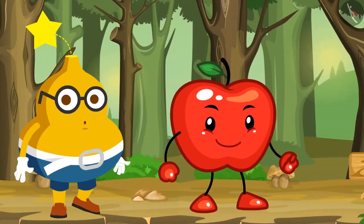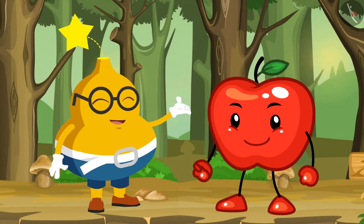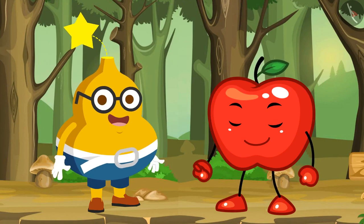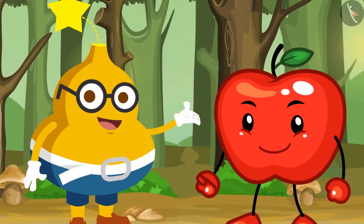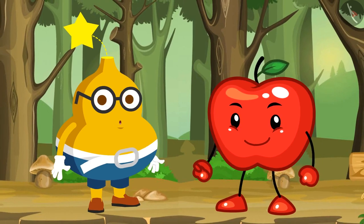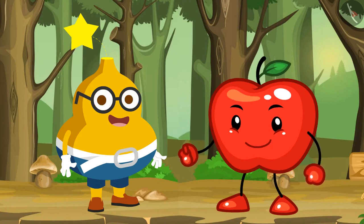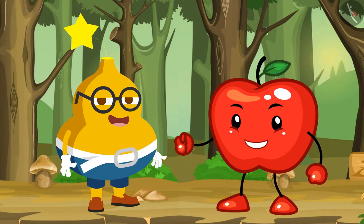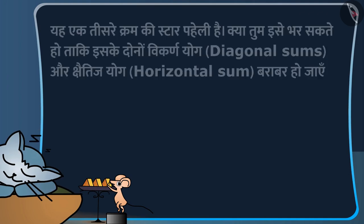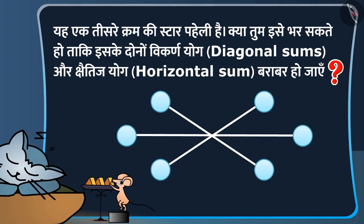फ्रूटी कहता है: आपी, कल तुमने मुझे दूसरे क्रम की स्टार पहेली को हल करने में मेरी सहायता की थी, इसलिए अब मैं किसी भी स्टार पहेली को हल कर सकता हूँ। तभी अबी कहता है: ओ, सच में? तो चलो देखते हैं, क्या तुम इस पहेली को हल कर सकते हो? ये एक तीसरे क्रम की स्टार पहेली है, क्या तुम इसे भर सकते हो?